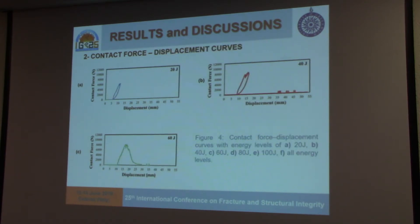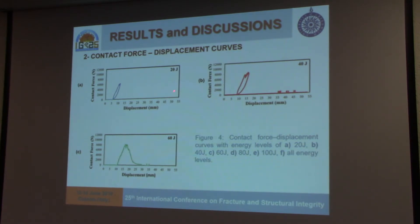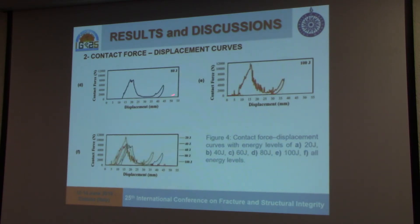For the contact force versus displacement curves, as you know these curves give us an idea about the absorbed energy levels during low velocity impact. As we increased the energy levels, the displacement levels were increasing as well, along with the contact force. For 20, 40, and 60 joules we got only one peak point, but with 80 and 100 joules we again got two peak points as expected.